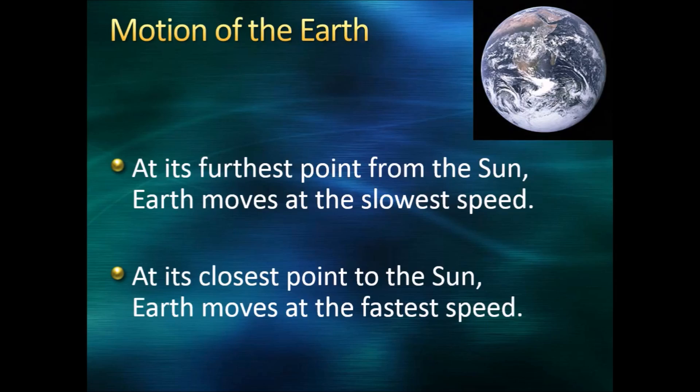When Earth is furthest from the sun, it moves at its slowest speed. When it's closest to the sun, it achieves its highest orbital speed.